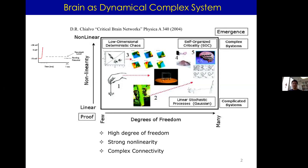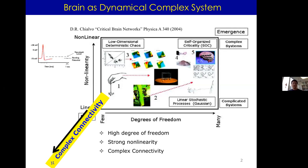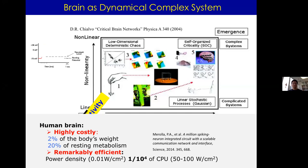Due to advances in imaging technology, we can now look at connectivity — how neural components are coupled in a very complex network, both structurally and dynamically. We emphasize this complex connectivity. In this three-dimensional space of complexity, the human brain is perhaps the most complex system we know so far.